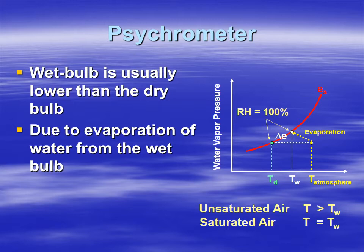When using the psychrometer, we wet the muslin wick on the wet bulb and allow it to evaporate. Through evaporation, temperature decreases because it takes energy to convert the liquid water in the wick into vapor — that energy comes from the thermometer and the surrounding air. At the same time, water vapor is being added to the air, so the yellow arrow moves left representing lower temperature, while water vapor pressure increases, moving up at an angle toward the red saturation line.